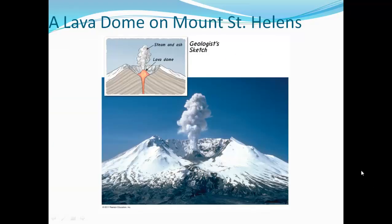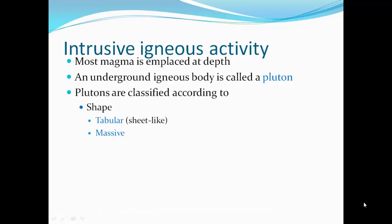After the Mount St. Helens eruption, there was still additional volcanic activity, with lava bubbling up and forming an obsidian dome.